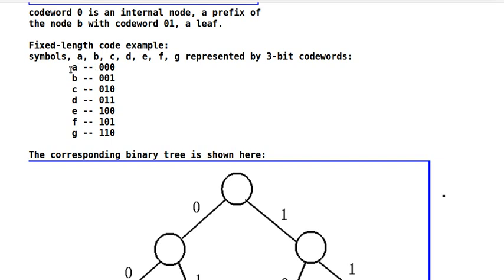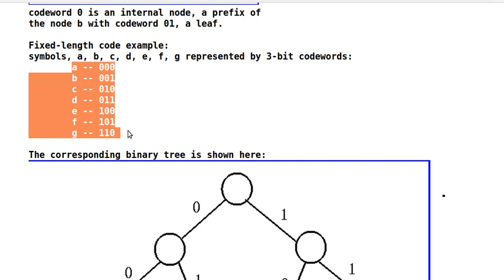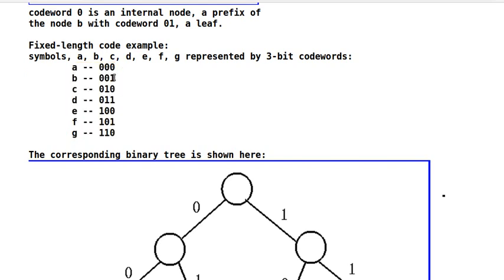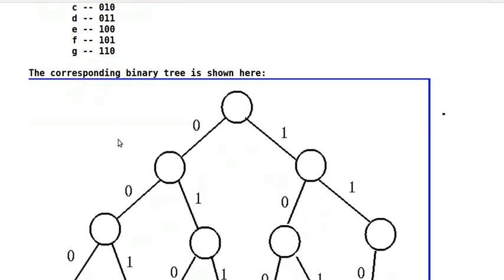The codeword of A is 000, B 001, C 010, D 011, E 100, F 101, G 110. The corresponding binary tree is shown here.